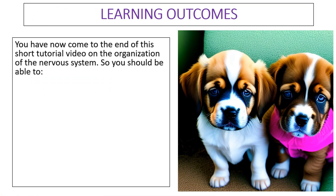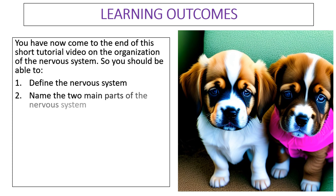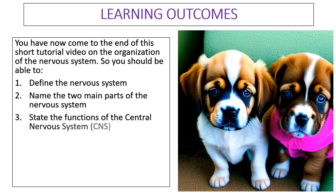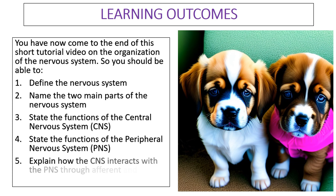You have now come to the end of this short tutorial video on the organization of the nervous system. You should be able to define the nervous system, name the two main parts of the nervous system, and state the functions of the central nervous system as well as the peripheral nervous system.